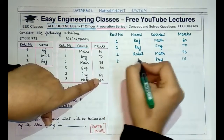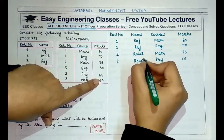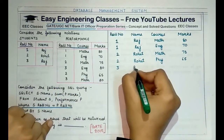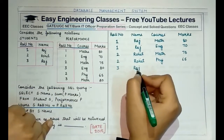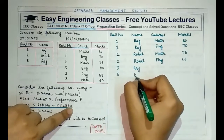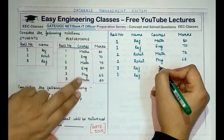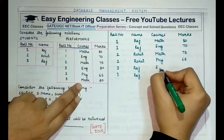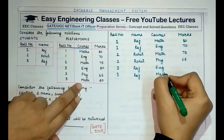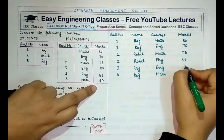The marks for Raj (role number 1) are 80 and 70 correspondingly. For role number 2, which is Rohit, he has taken Maths and Physics, with marks of 75 and 65. The last student, also named Raj, has taken English and Maths with marks of 80 and 80.